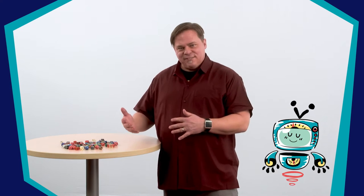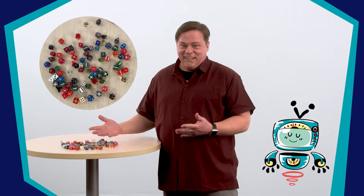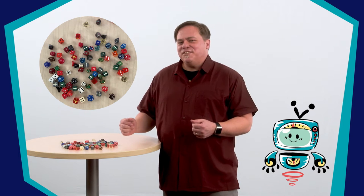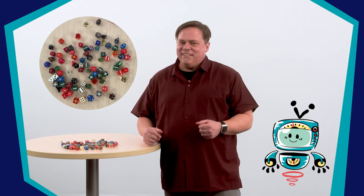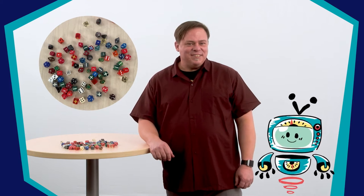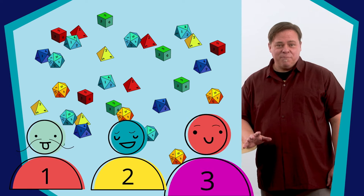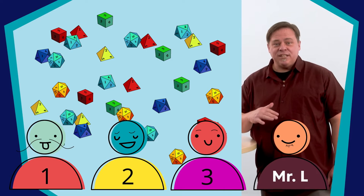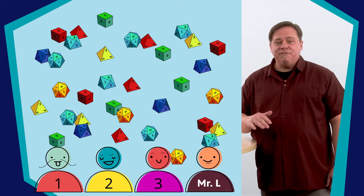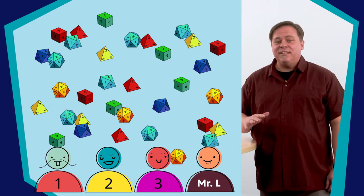Sometimes I have people come over to play games and I want to make sure everyone has some dice to use. I have this great bunch of dice. Let's use some math to figure out how many dice to give each of my friends. In my pile here, I have 34 dice. I have three friends coming over. That's plus me, so that's four of us. I want to divide the dice up so that everyone gets the same.